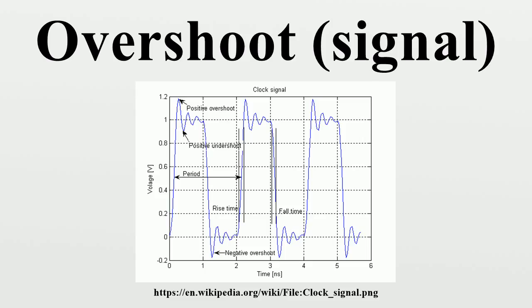In signal processing, overshoot is when the output of a filter has a higher maximum value than the input. This occurs, for instance, in using the sinc filter as an ideal low-pass filter. The step response can be interpreted as the convolution with the impulse response, which is a sinc function.